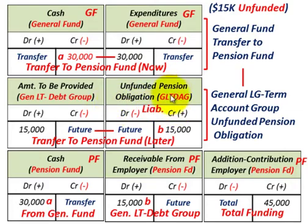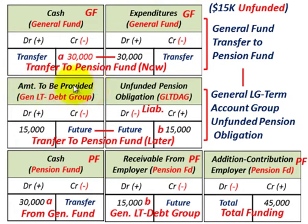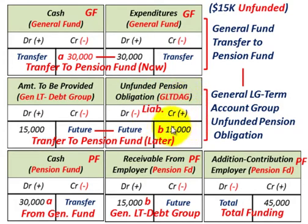For the unfunded portion of $15,000, we set it up in the general long-term debt account group for an unfunded pension obligation. The general long-term debt account group is reported under the general fund, but you keep long-term debt out of the general fund itself — it goes through the general long-term debt account group. So debit 'amount to be provided' in the general long-term debt group for $15,000 — that's what we'll transfer in the future. The associated credit goes to 'unfunded pension obligation,' also in the general long-term debt account group, credited for $15,000.